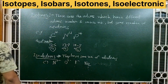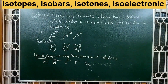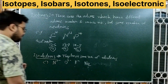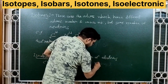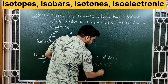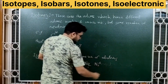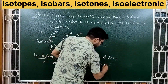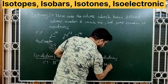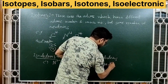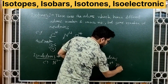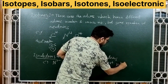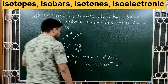Also isoelectronic: sodium Na⁺, magnesium Mg²⁺, and aluminium Al³⁺ — these cations also belong to the same isoelectronic series.